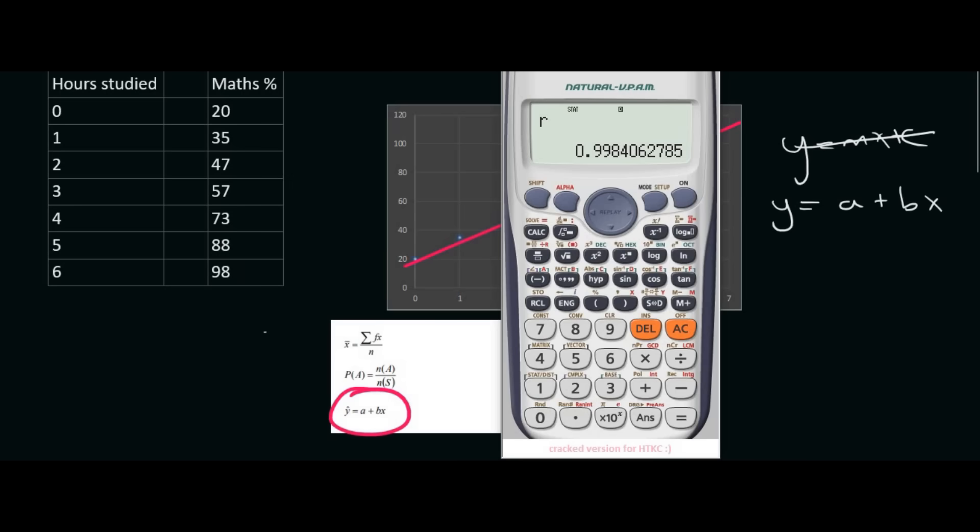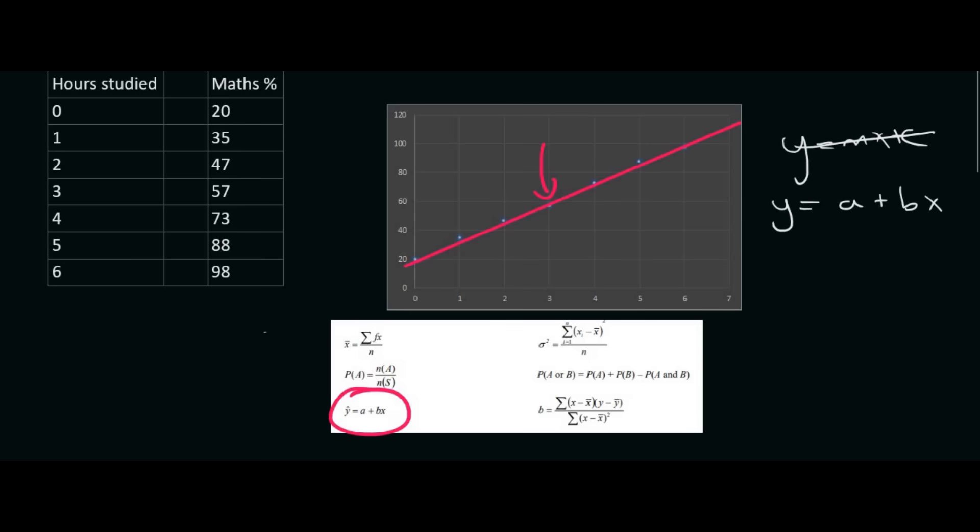And then what we can do is fill those values into our equation. So we said our a value was 20.5, and our b value was 13.07. So that's 20.5 plus 13.07x. This is going to be the equation of this line over here. So if they ask you any other questions, then you can just use this formula over here.